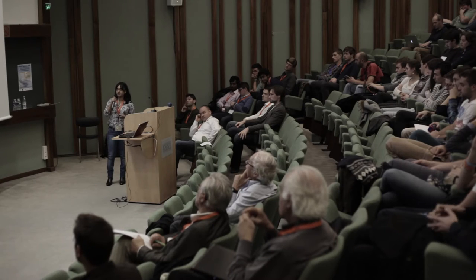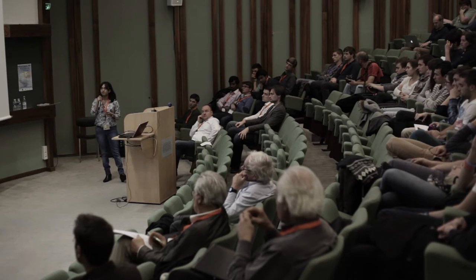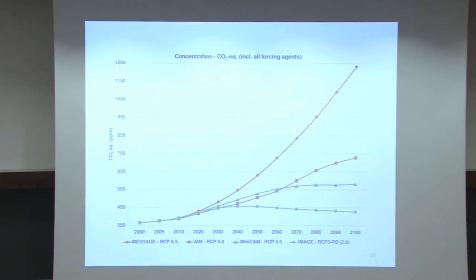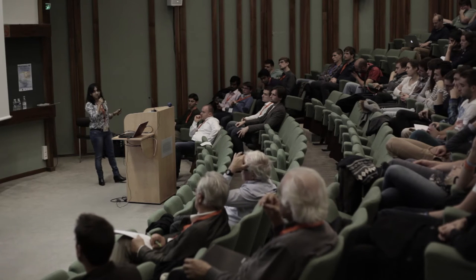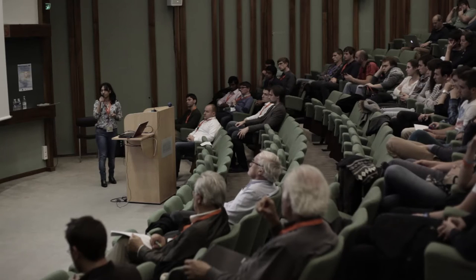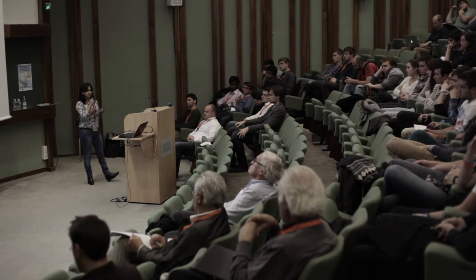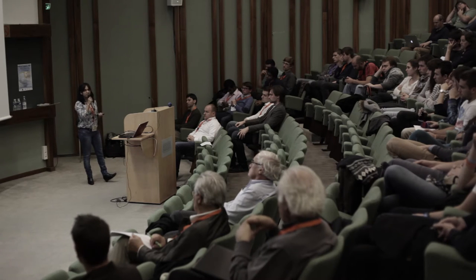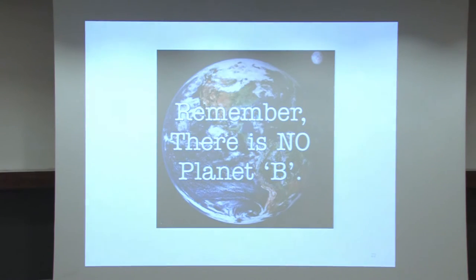From these RCP scenarios, we have projections over a century for CO2 emissions. The last scenario, RCP 8.5, takes into account no adaptation or mitigation, and shows CO2 emissions reaching very high values. The lowest scenario, RCP 2.6, shows CO2 emissions rising to 2030 and thereafter declining. To have lower emissions, we need adaptation and mitigation policies starting right now — from individual level to government to international level — because there is no Planet B.